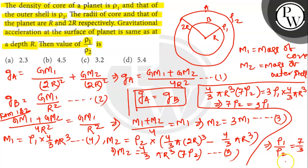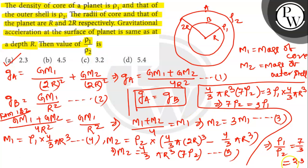Thus the ratio rho1 / rho2 is equal to 7/3, which is approximately 2.3. So option A is the correct answer. The value of rho1 / rho2 is equal to 2.3. Thank you.